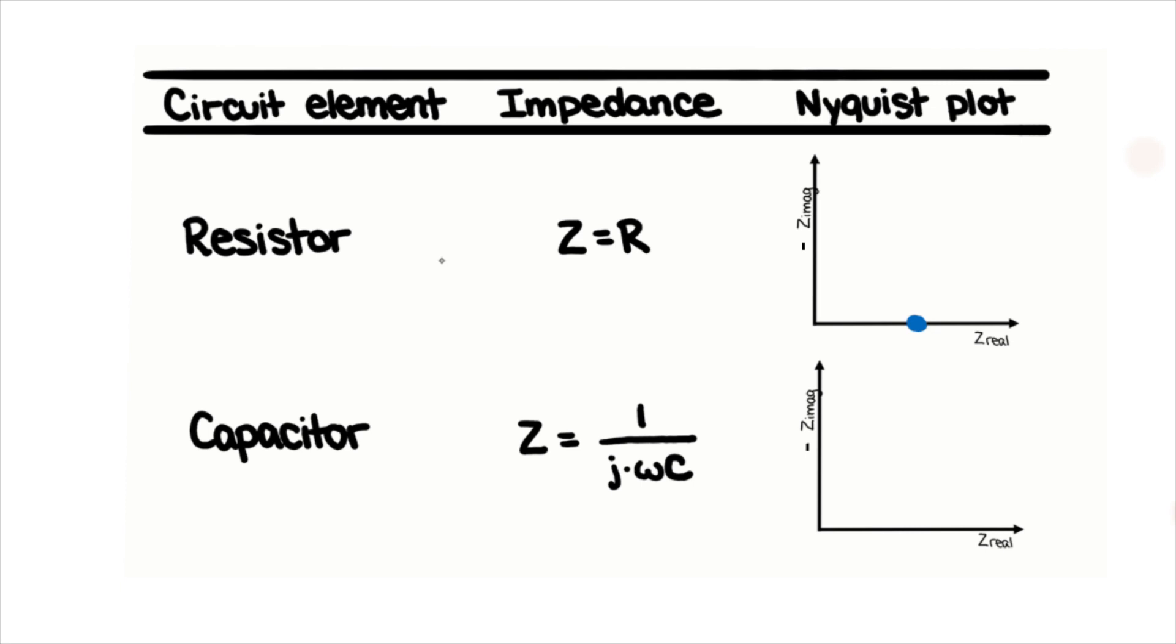Capacitors represent charge separation at an interface, so they're very useful for representing electrochemical components, such as double layers and grain boundaries. Their Nyquist plot has only a line parallel to the y-axis because they are purely imaginary.